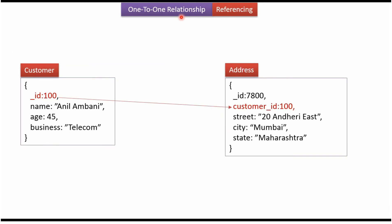Here we will see how to establish one-to-one relationship using the referencing way. Here you can see the customer document, and this customer document will be stored in the customer collection. It has name, age and business, and underscore_id is 100 which is the primary key.